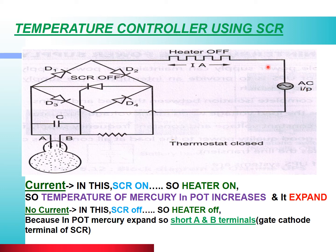First, we will see the input supply. The gate supply is given to the SCR, so the SCR turns on. After this, current flows as follows: from the positive input supply, through the heater, through diode D2, through the SCR, through diode D3, and back to the negative supply. This completes the current flow path and the heater turns on.